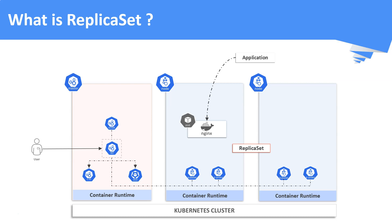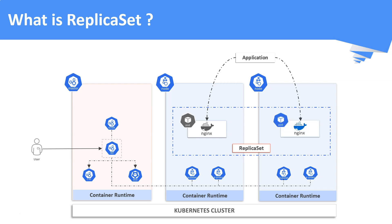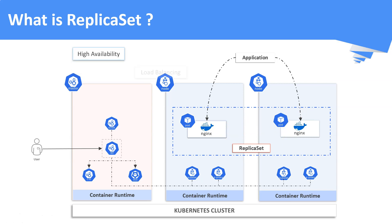Assume that we have created a replica set with a replica count of 2. The replica set will run two instances of your application as replicas or pods. Even when your pod goes down, it tries to bring up your pods to ensure the correct number of replicas are always running in the cluster. As per our replica set definition, two replicas should always be running in the cluster. This guarantees high availability and load balancing for your application.